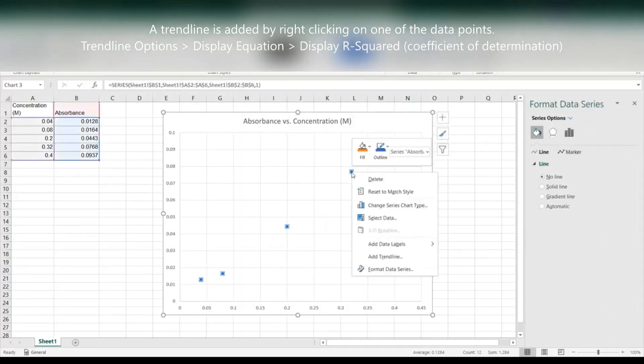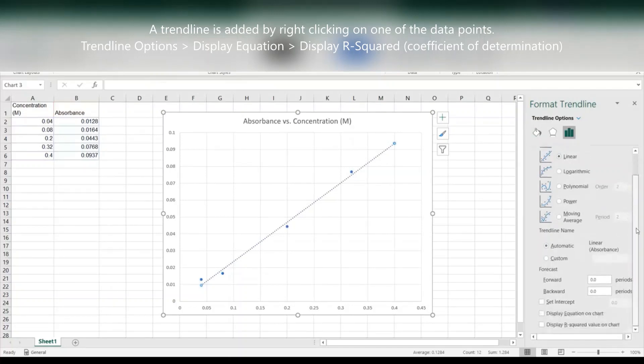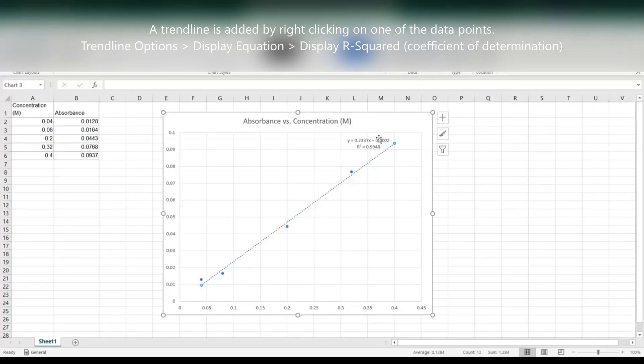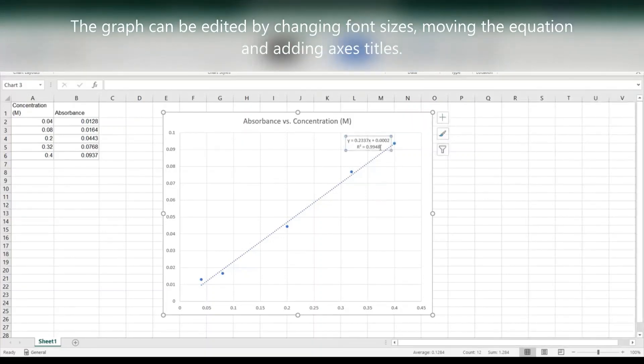Next what I'm going to do is add a trend line by right clicking on one of the data points. I do want to select linear and then I'm going to display the equation and the r squared value on the graph. Next you can see that you can resize the font for the displayed equation so I can make that bigger and I'm also able to move that to a better location on the graph so it's easier to read.